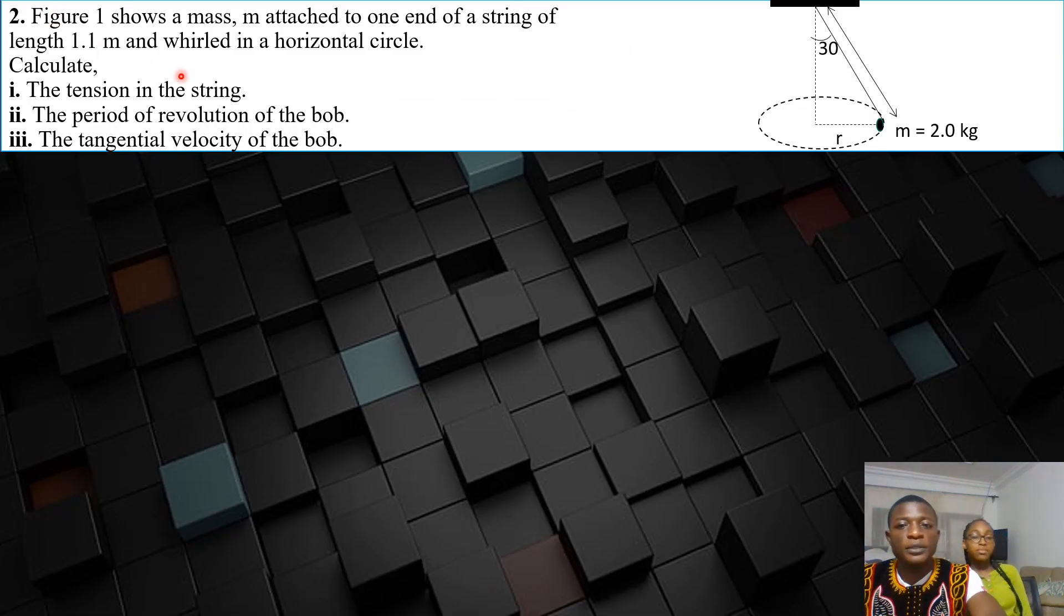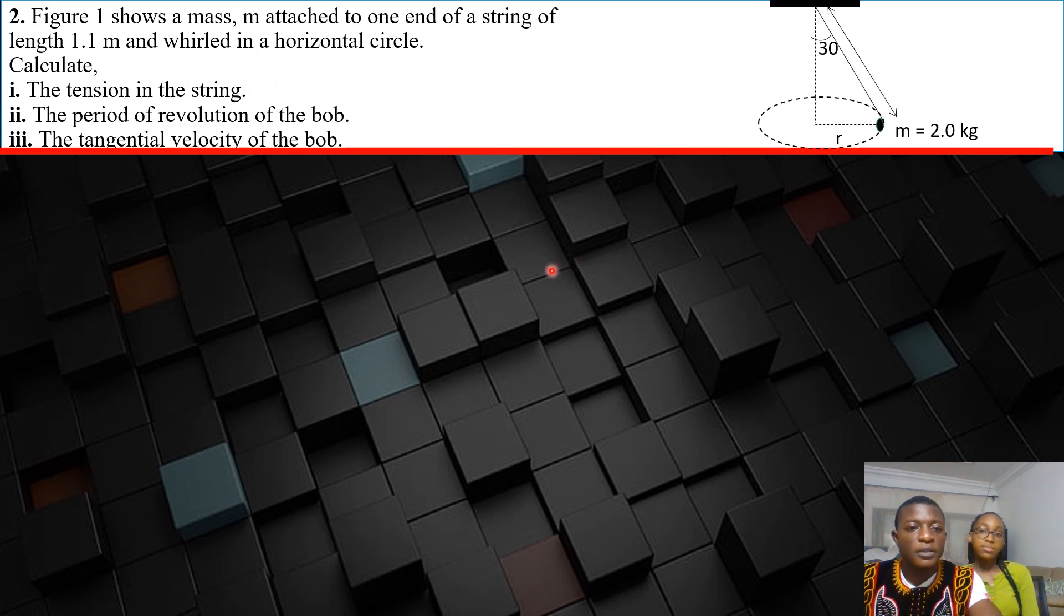So the question is right there. The very first thing we have to do in time with the tension in the string is to resolve the tension. Resolving the vertical component, it's going to be T cos 30 degrees. The horizontal component is going to be T sin 30.